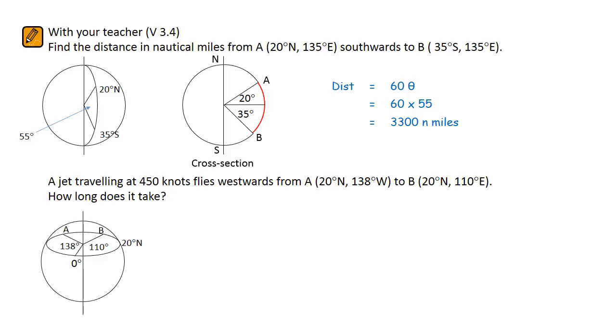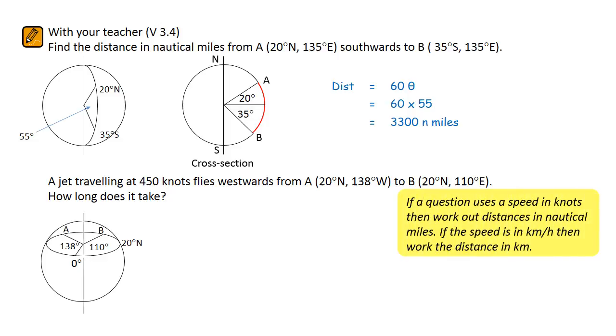In the second question, we were asked to find the time involved in a flight and were given a speed of 450 knots. It is always important to read each question carefully, as some questions are written in knots and others are in kilometers per hour. If the speed is in kilometers per hour, then you want the distance in kilometers.